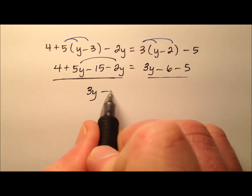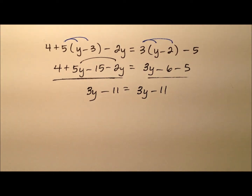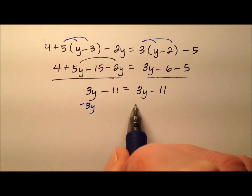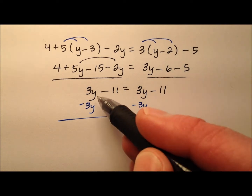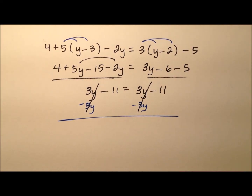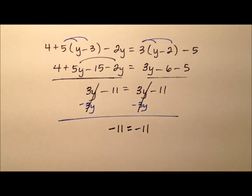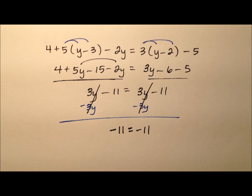That gives us 3y minus 11 equals 3y minus 11. Same kind of situation — let's subtract 3y from both sides. Not only do those y's cancel from the left, they also cancel from the right, and I'm left with negative 11 equals negative 11. All the variables have canceled, so how can I solve the equation and isolate that variable if all the variables are gone? Well, you can't do it that way.